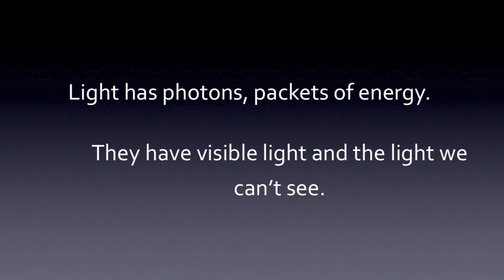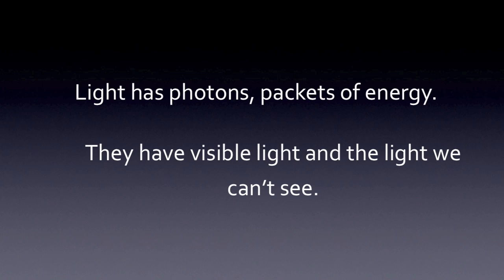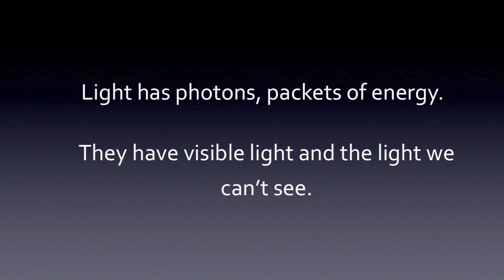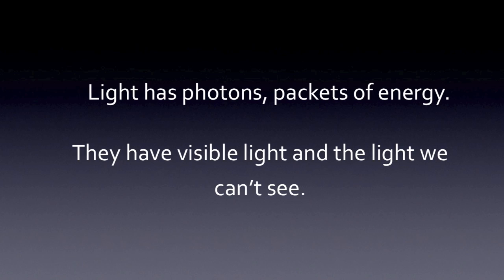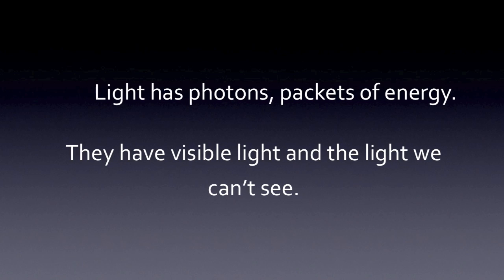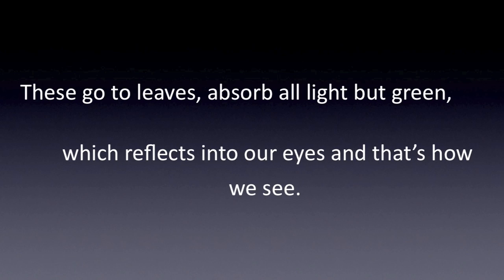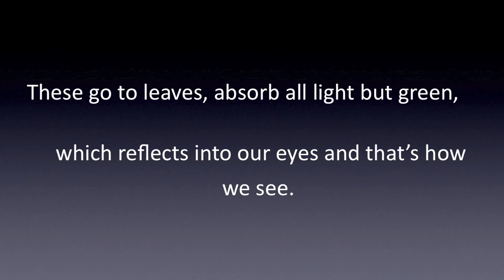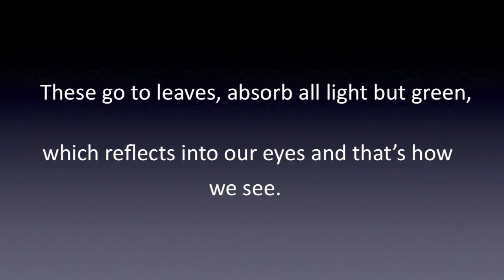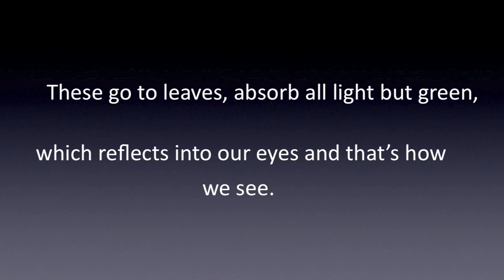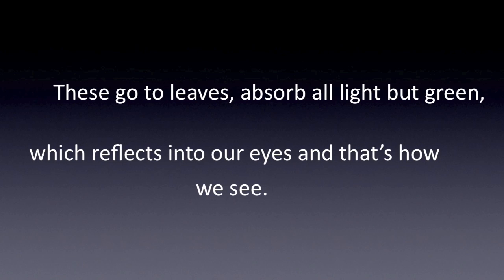Light has photons, packets of energy; they have visible light and the light we can't see. These go to leaves, absorb all light but green, which reflects into our eyes, and that's how we see.